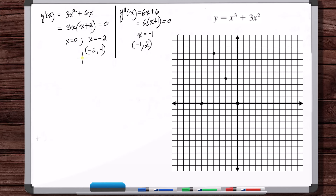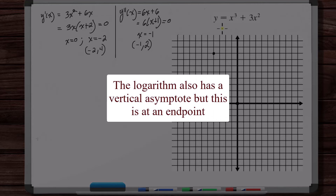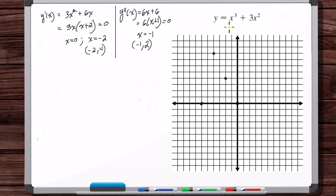In a typical situation you could take the limit as x approaches each critical point from the left and right to check for vertical asymptotes. But here, the only situations that produce vertical asymptotes are dividing by zero or certain trig functions other than sine and cosine. This polynomial doesn't do either of those things. So there are no vertical asymptotes and no horizontal asymptotes.